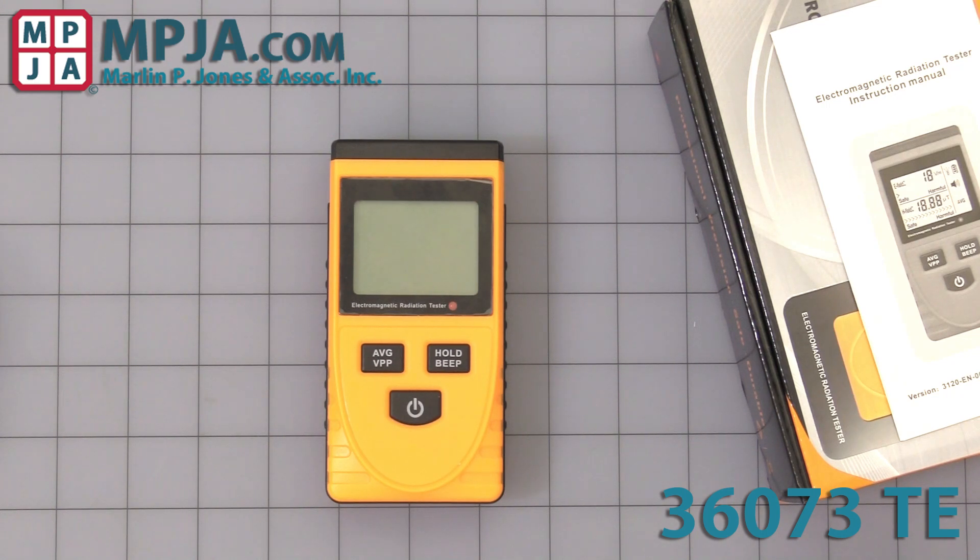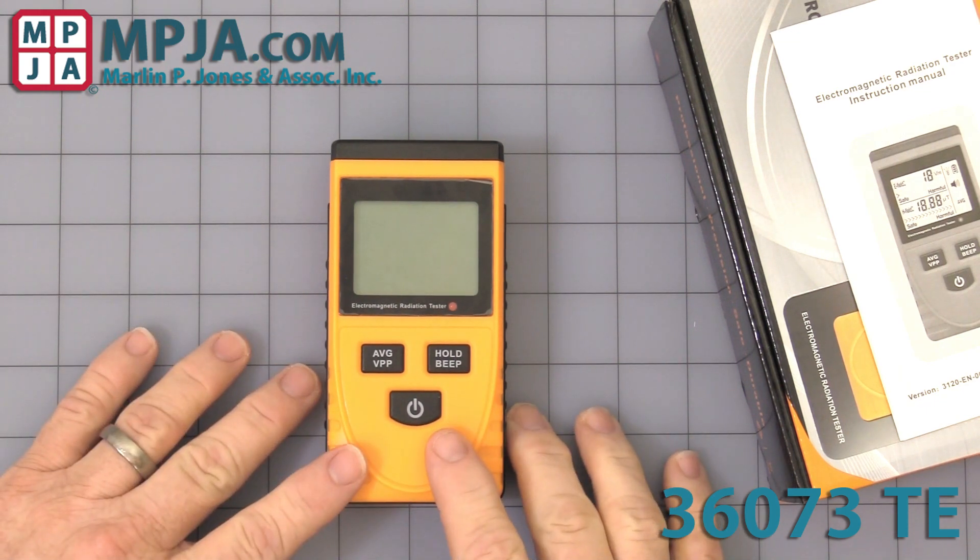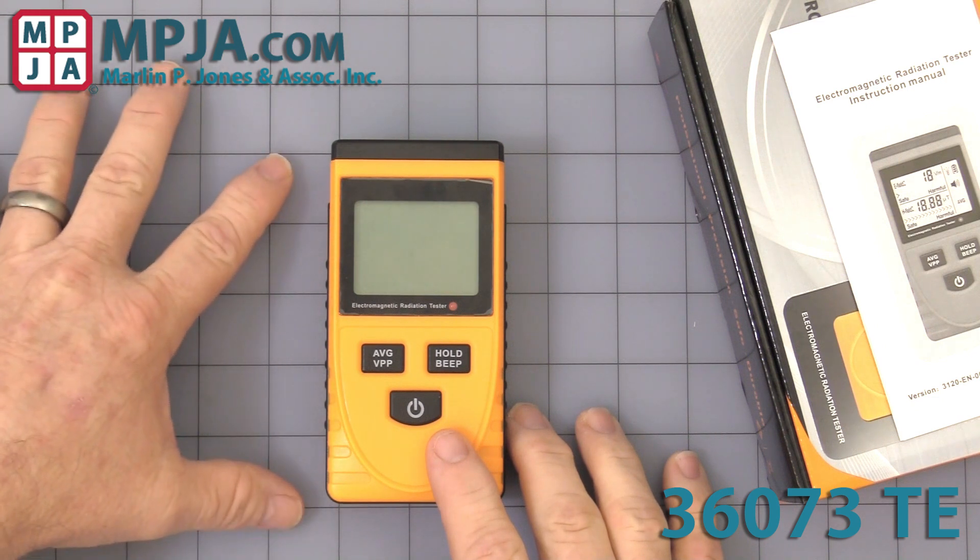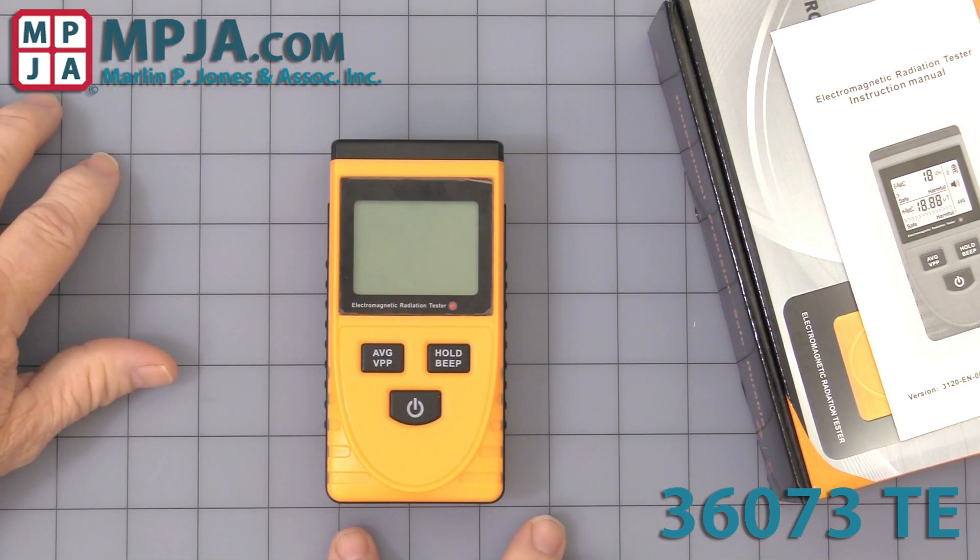Hello, today's video is on stock number 36073 TE, the electromagnetic handheld meter. As you can see the size, each square is one inch, so it's about five inches by two and a half inches.